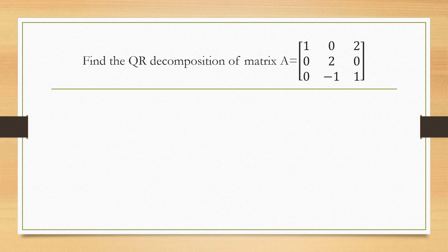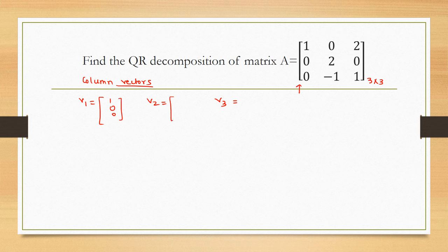The matrix is here. Your first tip is: you should know about the Gram-Schmidt process. If you haven't watched that video, please go through it and then come back to this video. Just like in the Gram-Schmidt process, you have to split this matrix into column vectors. As you can see, this is a 3x3 order matrix, so it will have 3 columns. Let's assume the 3 column vectors are V1, V2, V3. The first column is [1, 0, 0], the second column is [0, 2, -1], and the third column is [2, 0, 1].